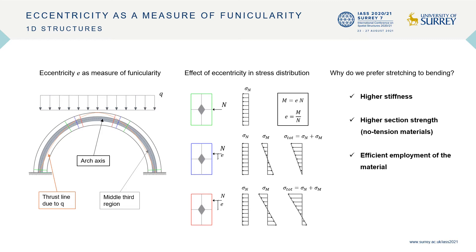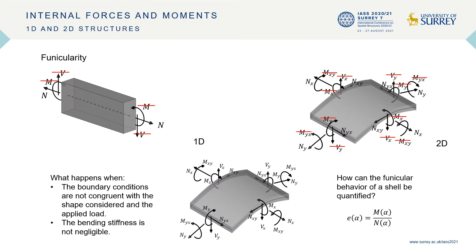When a 1D structure is not funicular, it is possible to appreciate the distance between the axis and the thrust line. This distance is called eccentricity and is equal to zero if the structure is funicular. Otherwise, it generates bending moments proportional to its value that we want to avoid in order to pursue higher stiffness, higher section strength, and efficient deployment of construction materials.